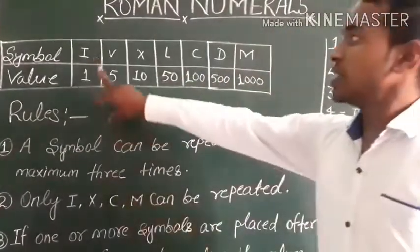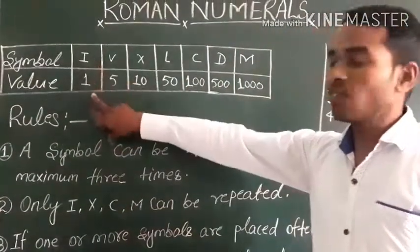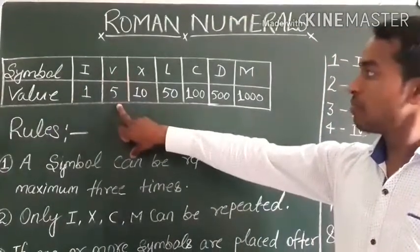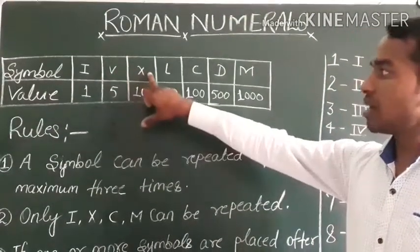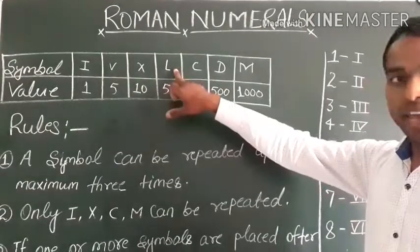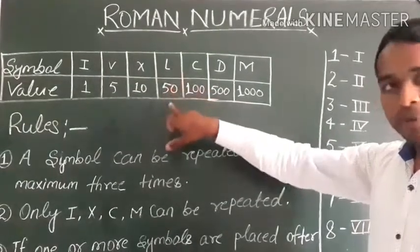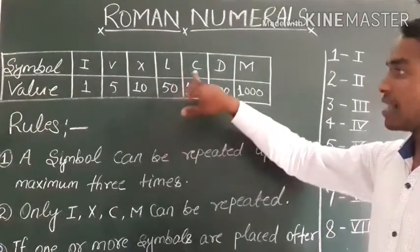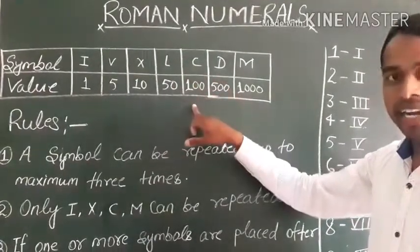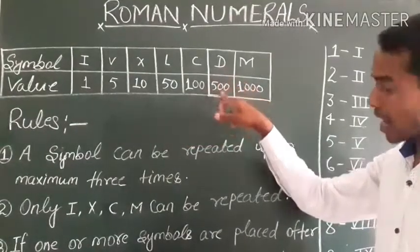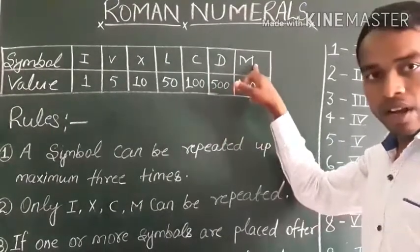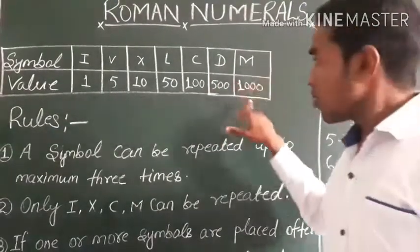The symbol I is 1, and the symbol V is 5. The symbol X is 10, and the symbol L is 50. The symbol C is 100, the symbol D is 500, and the symbol M is 1000.